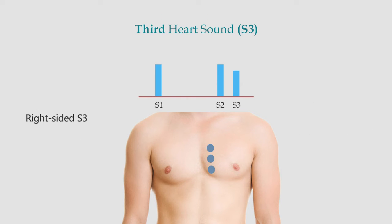A right-sided S3 is rare and if present is always abnormal. Right-sided S3 is heard best over the third, fourth, and fifth intercostal spaces along the left sternal border and over the epigastric area. It is more prominent during inspiration because of increased blood flow into the right ventricle.